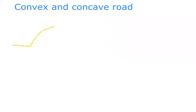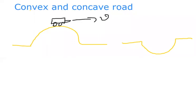The first concept we are going to discuss is convex road — a road that curves upward like this — and concave road, which curves downward like this. For an object moving on a convex road at the top position with speed v, weight acts downward and normal reaction acts upward. For an object on a concave road at the bottom moving with speed v, the same two forces apply.